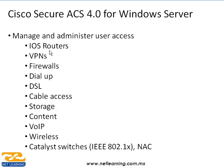Además no nada más nos va a servir para los routers con IOS, sino también para usuarios que se conectan por VPN. Igual si necesitamos un nuevo usuario es nada más hacerlo en un solo lugar que en todos nuestros concentradores de VPN. Igual en los firewalls, acceso por dial-up, DSL, cable, storage, content, voz sobre IP, la red wireless. En aquellos casos que tengan algún tipo de autenticación pueden amarrarlo con un ACS. También los Catalyst switches que utilizan 802.1X, esto va amarrado con la parte de NAC, que veremos más a detalle cuando veamos seguridad en capa 2.